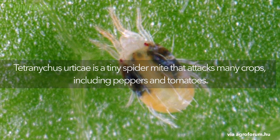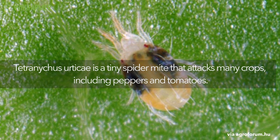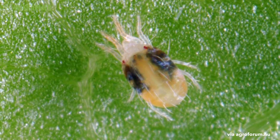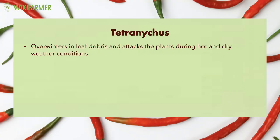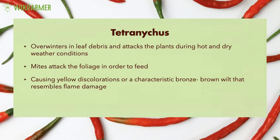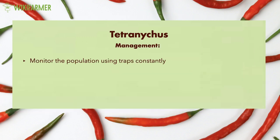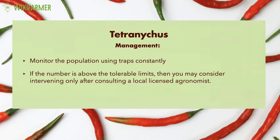Tetranychus. Tetranychus urticae is a tiny spider mite that attacks many crops, including peppers and tomatoes. This pest overwinters in leaf debris and attacks the plants during hot and dry weather conditions. Mites attack the foliage in order to feed, causing yellow discolorations or a characteristic bronze-brown wilt that resembles flame damage. We may also observe webs between the foliage. A common practice is to monitor the population using traps constantly. If the number is above the tolerable limits, then you may consider intervening only after consulting a local licensed agronomist.